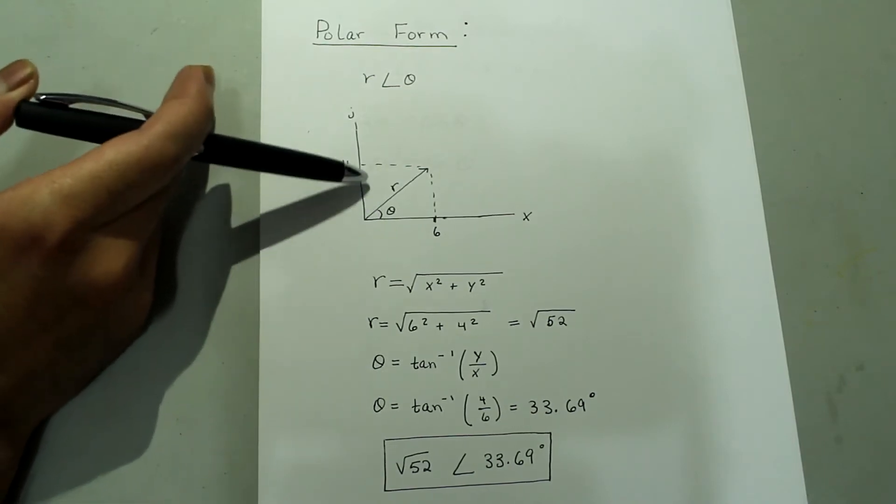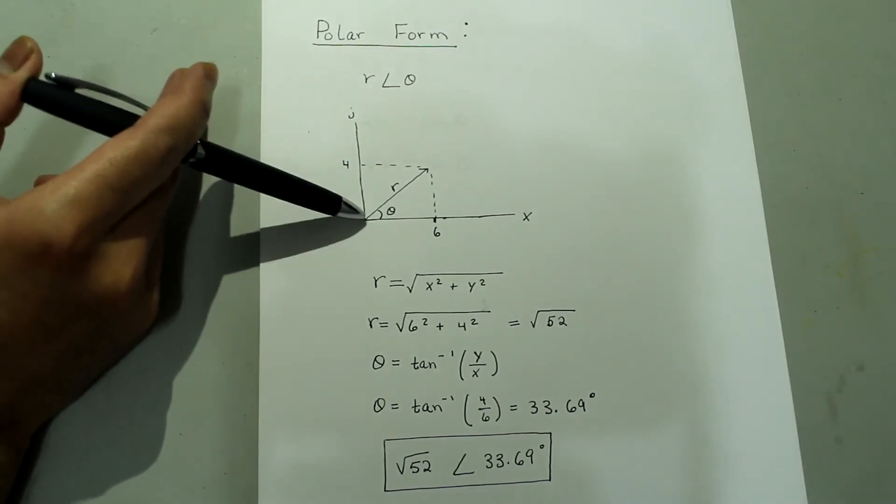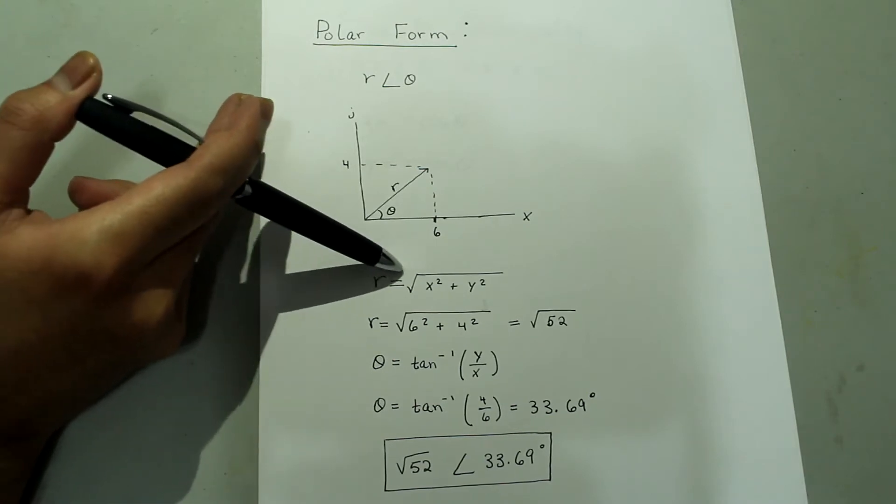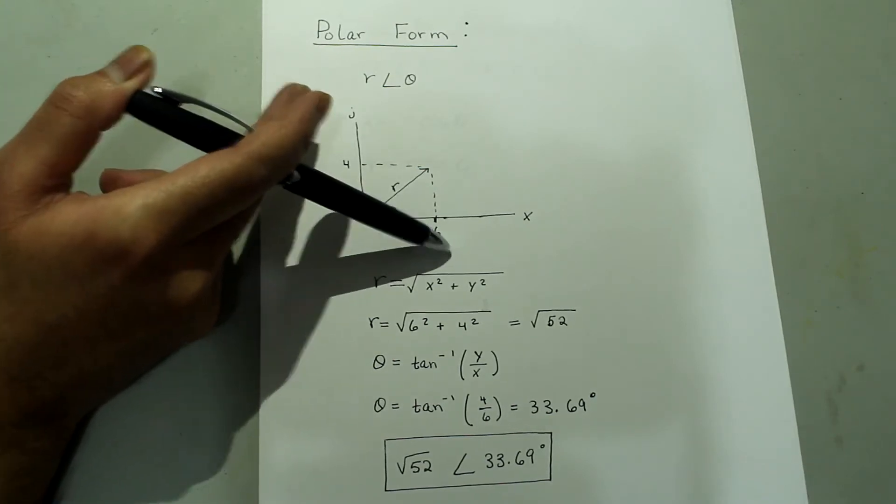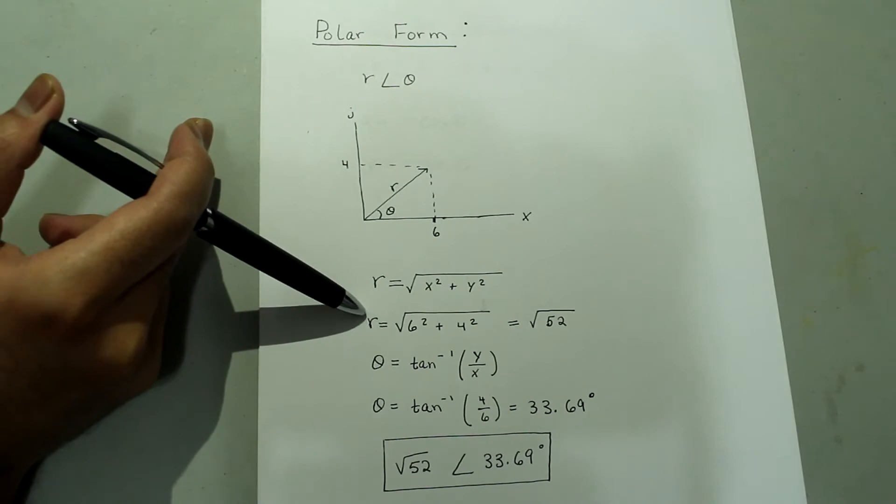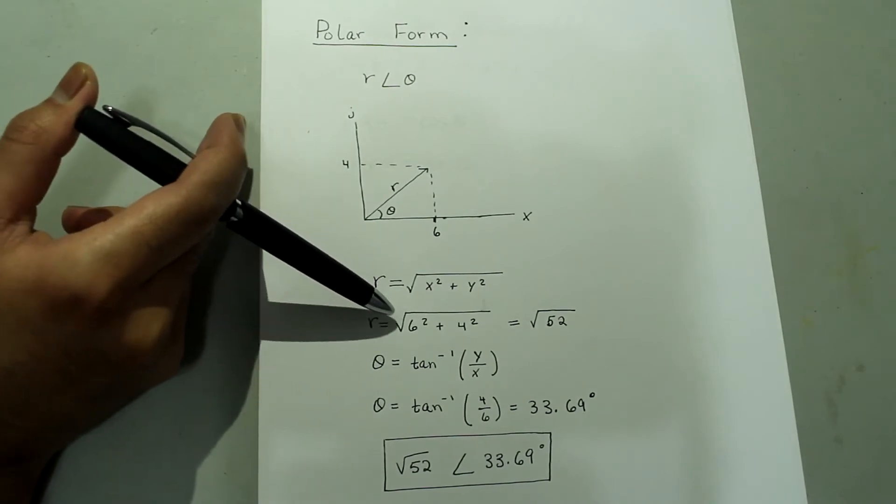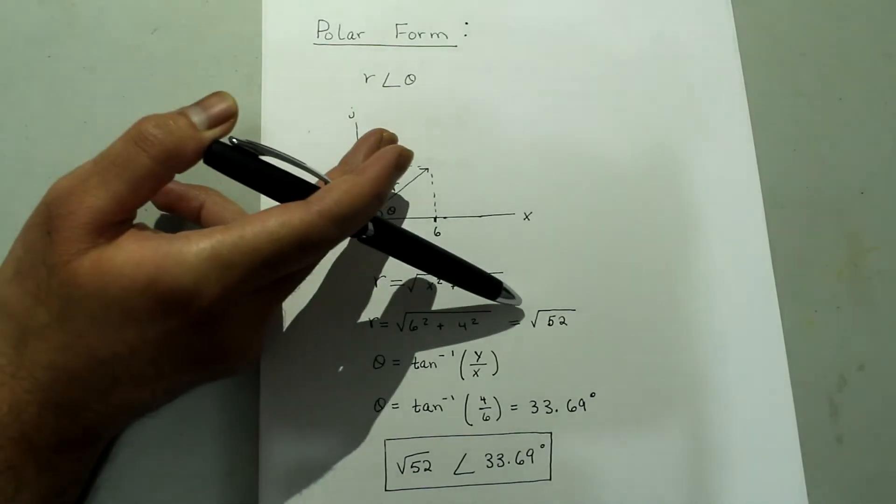You can see that this is just a Pythagorean theorem that's going to be used here. r is equal to square root of x squared plus y squared. So in this case, that's r equals square root of 6 squared plus 4 squared, which equals 52.